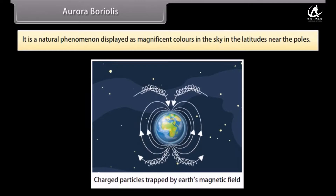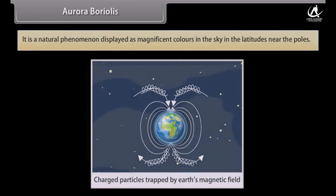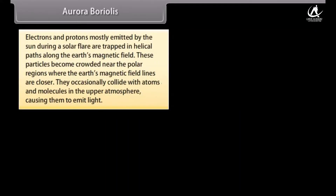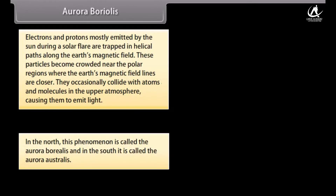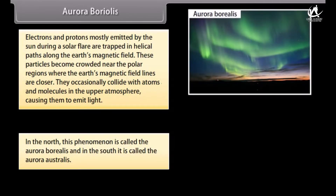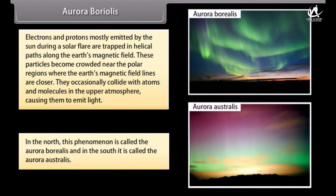Aurora Borealis is a natural phenomenon displayed as magnificent colors in the sky at latitudes near the poles. Electrons and protons, mostly emitted by the sun during a solar flare, are trapped in helical paths along the Earth's magnetic field. These particles become crowded near the polar regions where the Earth's magnetic field lines are closer. They occasionally collide with atoms and molecules in the upper atmosphere, causing them to emit light. In the north, this phenomenon is called the Aurora Borealis, and in the south, it is called the Aurora Australis.